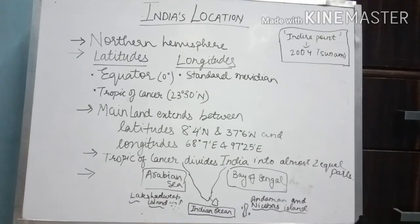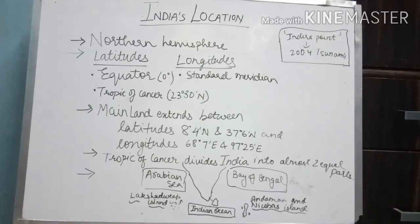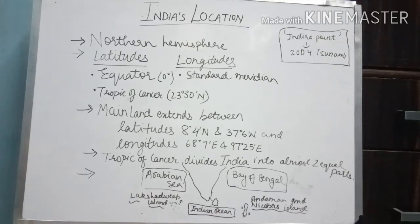Next, we will see two terms: latitudes and longitudes. Latitudes are imaginary horizontal lines which we can see on the globe, and longitudes are imaginary vertical lines which we can see on the globe. We will talk about two latitudes and one longitude. The equator is 0 degrees — the most important latitude and the center of our earth — and the Tropic of Cancer, which is 23 degrees 30 minutes North.